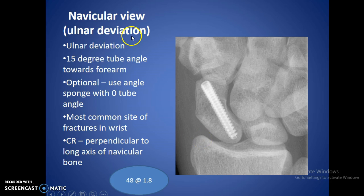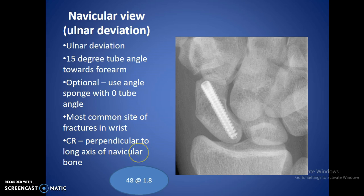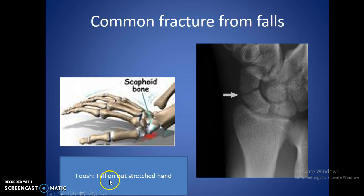For the navicular view with ulnar deviation, we flex the hand to the medial portion of the body. This is going to open up the scaphoid bone when we put a 15-degree angle on it and flex the wrist toward the outside. This is the bone that breaks most often in the hand and wrist, so we do a special view just for this one. You can use a zero-degree angle if you have the proper sponge available. This is a common fracture from falls — FOSH stands for fall on outstretched hand. When that happens, a lot of the pressure goes to this bone and it's very easy to fracture it right in half.